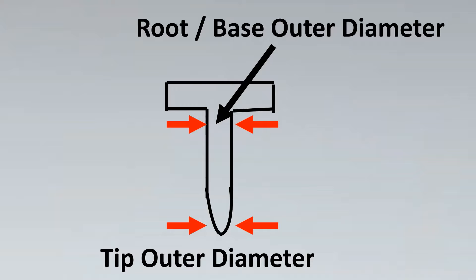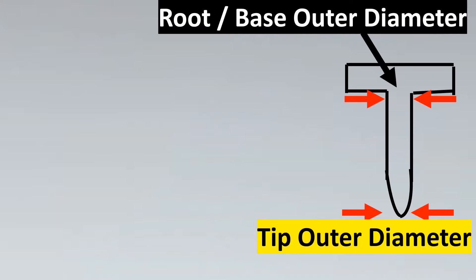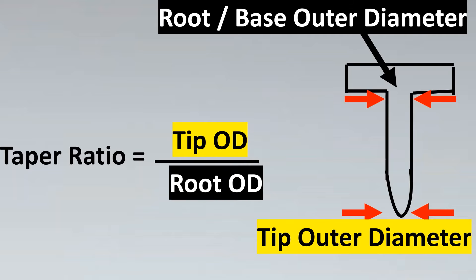Now, let's get into the formula. So the taper ratio formula is very simple. As the word suggests, it's going to be a ratio. It's going to be a ratio of the tip outer diameter to the ratio of the root or the base outer diameter of the thermowell. Now, even if it sounds so simple, it's got a very good significance in terms of our calculations as to what happens when you increase the tip or the root diameter.